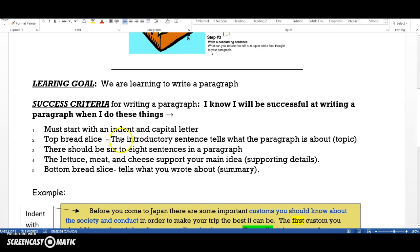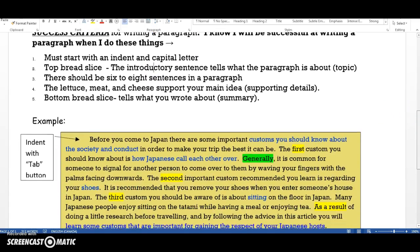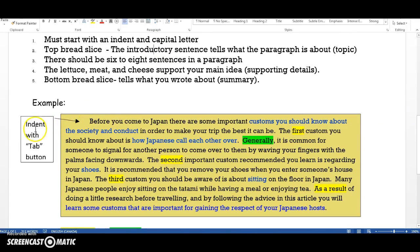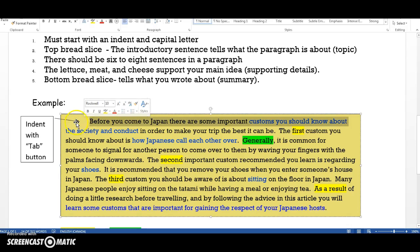Some additional success criteria for a paragraph. You must start your paragraph with an indent and a capital letter. So, for example, here. This is an indent. This space. And this B is a capital letter. So, your paragraph should also start like that.